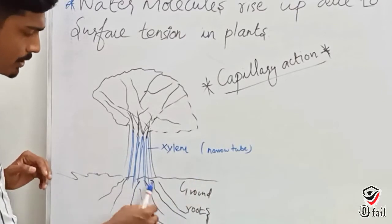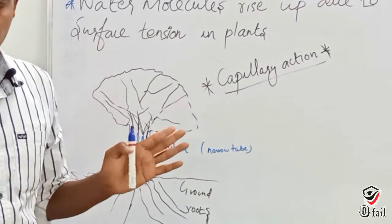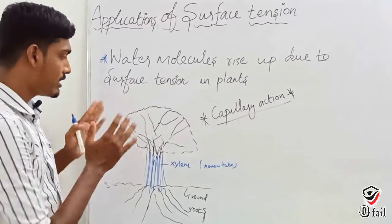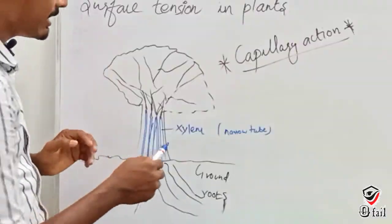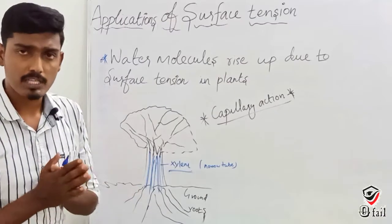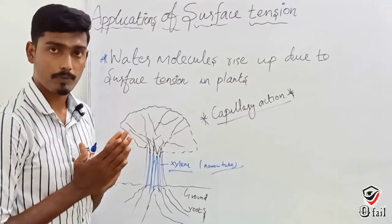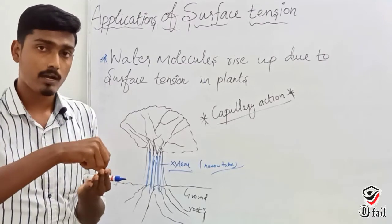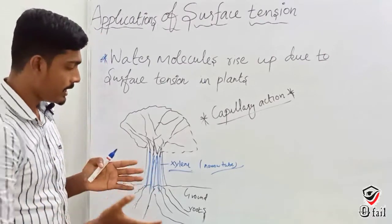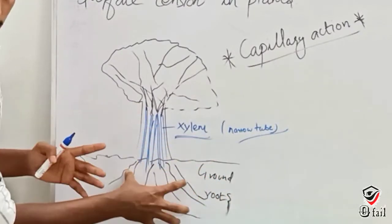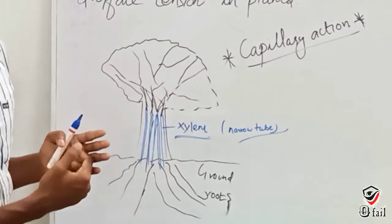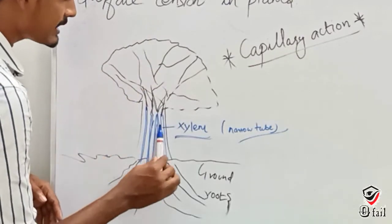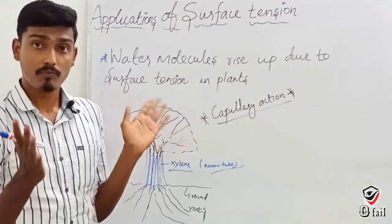Imagine this is the ground. The roots are in the ground. Water rises through the narrow tubes — the xylem — which are part of the plant, like small tubes. Due to capillary action, water rises in the small tubes and distributes out to the middle of the branches and leaves.